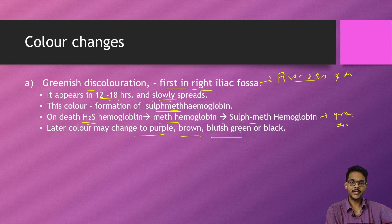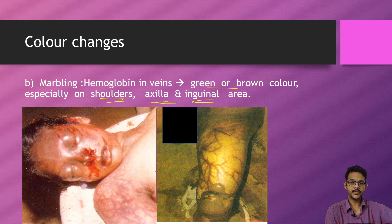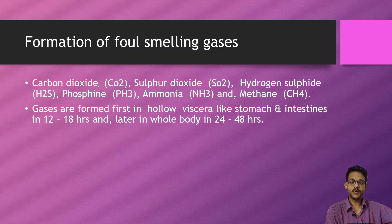Later the color may change to purple, brown, green, and then black as hemoglobin starts degrading. Then there is the marbling effect — a contrasting color change seen in decomposition due to coloring of veins. Hemoglobin in veins becomes green or brownish, especially in the shoulders, axilla, and inguinal regions, leading to a marbling effect. In images, you can see veins stained in the axilla and thigh region — this is called marbling and is one more sign of decomposition.